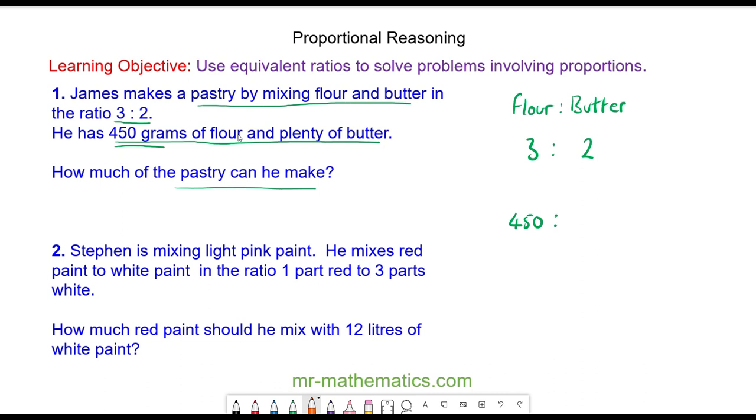We can use an equivalent ratio to calculate the amount of butter by multiplying the three by 150 because this makes the 450, and by multiplying both sides by the same value the ratio remains equivalent. So two times 150 is 300.